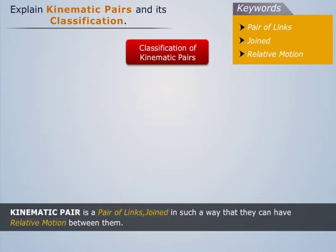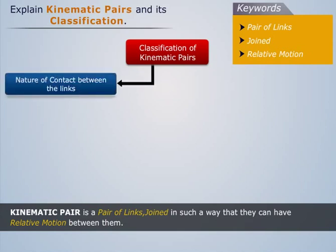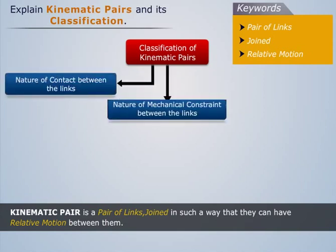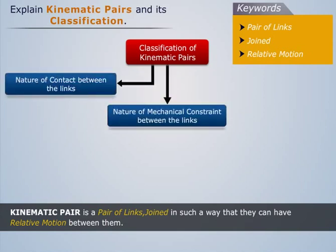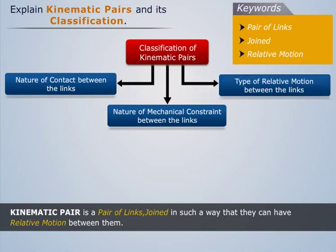There are three parameters for classifying kinematic pairs: nature of contact between the links, nature of mechanical constraint between the links, and type of relative motion between the links. Now let's try to understand each of these classifications one by one.